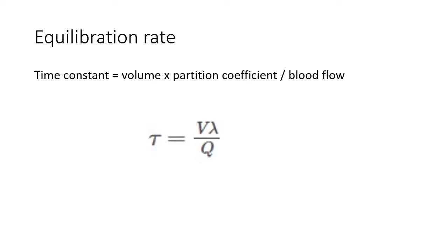Capital tau, the T, is time constant. V is volume. Lambda is the partition coefficient. Q is the rate of blood flow.